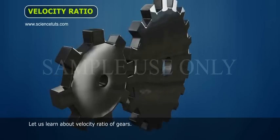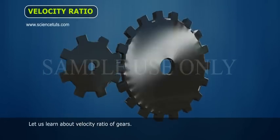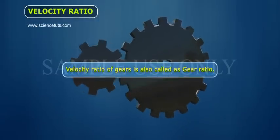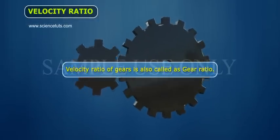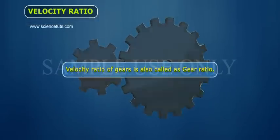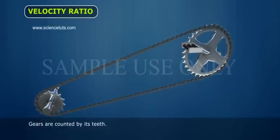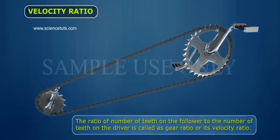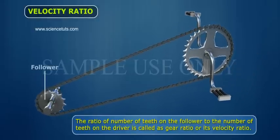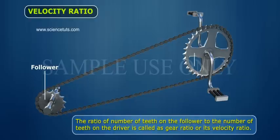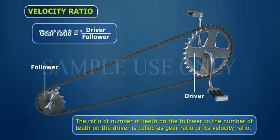Let us learn about velocity ratio of gears. Velocity ratio of gears is also called as gear ratio. Gears are counted by their teeth. The ratio of number of teeth on the follower to the number of teeth on the driver is called as gear ratio or its velocity ratio.